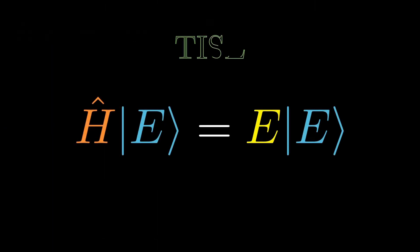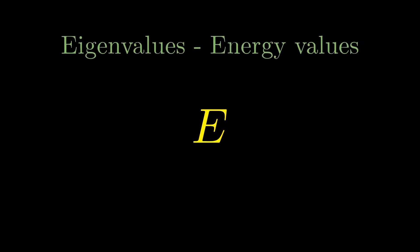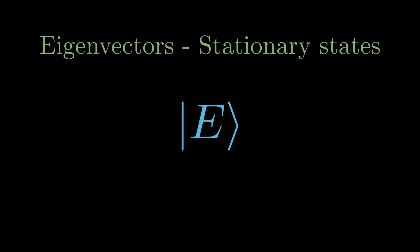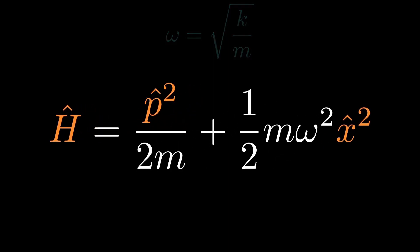Let's call it TISC for short. Our linear operator is the Hamiltonian, which represents the total energy of the system. The eigenvalues are the allowed energy values in the harmonic oscillator, and the eigenvectors are stationary states, which are definite states of energy. Classically, the Hamiltonian is kinetic plus potential energy. You get the potential energy term ½kx² by integrating Hooke's law. Here k is the stiffness of the spring, omega is the angular frequency defined as the square root of k over m. Substituting back in gives us the Hamiltonian equation on screen.